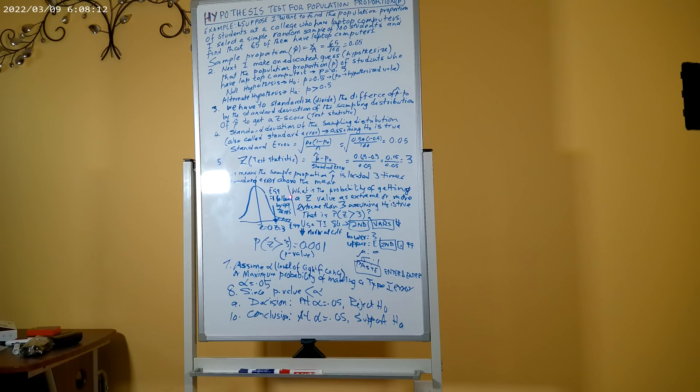Now we need to find out what is the probability of getting a z value as extreme as 3 or more extreme than 3, assuming H₀ is true. That is, what is the probability of z greater than 3?